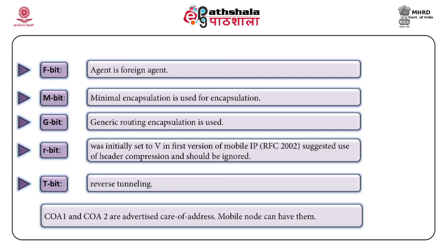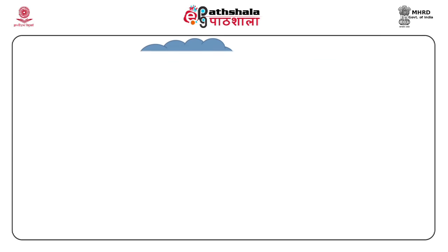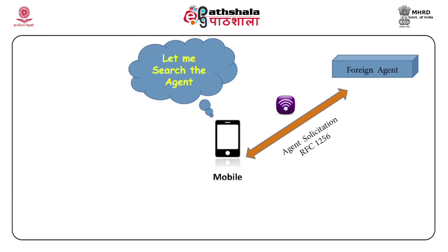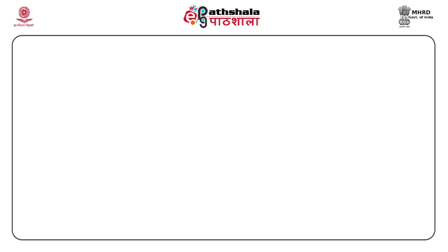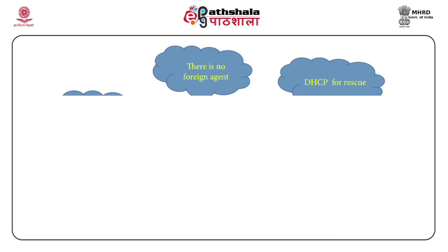A foreign agent should broadcast at least one care of address. It is also possible that the mobile node does not want to wait for agent advertisements when it enters a foreign network. In this situation, it can broadcast agent solicitations based on RFC 1256 for router solicitations. These solicitations are answered by the foreign agent, but the mobile node cannot send solicitations an infinite number of times, as it would result in flooding the network. At most, three solicitations are sent. If no reply is received, it decreases the rate of solicitation to avoid network flooding.